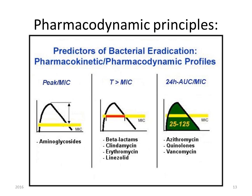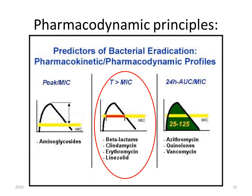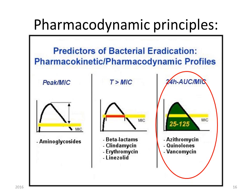Here you see the basic pharmacodynamic principles for a few classes of antibiotics. In case of the aminoglycosides, efficacy relates to the ratio of peak concentration divided by the MIC — the minimal inhibitory concentration for the particular microorganism. For the beta-lactams, clindamycin, erythromycin, and linezolid, efficacy depends on the time the concentration is above the MIC. For azithromycin, the quinolones, and vancomycin, efficacy depends on the 24-hour AUC divided by the MIC.